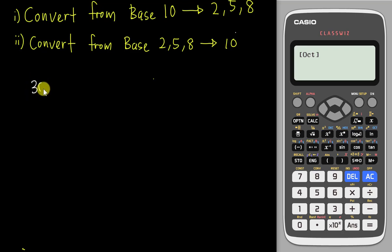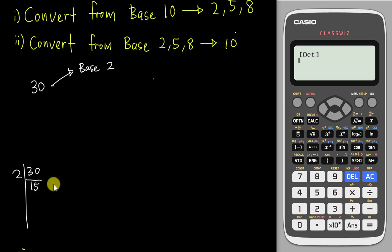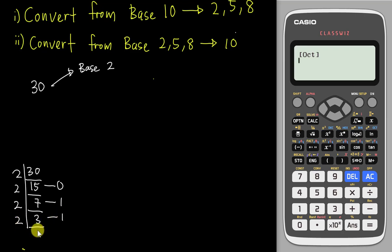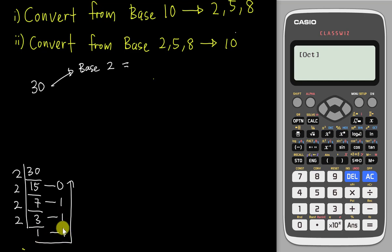Let's say we have the number 30 and I want to convert it to base 2. I divide 30 by 2 and get 15 with remainder 0. Divide again: 7 remainder 1 (since 2×7=14, 15−14=1). Divide again: 3 remainder 1. Then 1 remainder 1, and 0 remainder 1. Reading the remainders from bottom to top, 30 in base 2 is 11110.